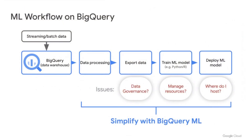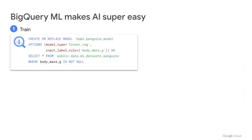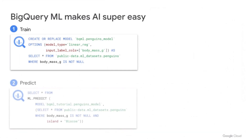BigQuery ML makes it easy to manage data, easy to not have to deal with infrastructure, and easy to not have to deploy anywhere — it can be done right inside BigQuery for batch prediction. First step, we just train a model by writing a simple SQL query: CREATE OR REPLACE MODEL, and you point to the dataset that's already inside BigQuery. BigQuery has tremendous scale and compute capability, so whether it's a dataset with 1,000 rows or millions of rows, you do not have to worry about it. And once the model training is done, you can start doing prediction by calling SELECT * FROM ml.predict.